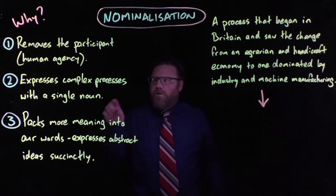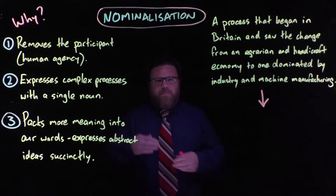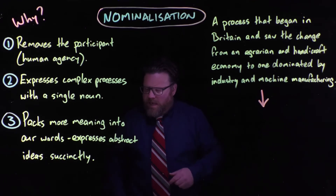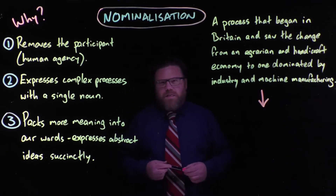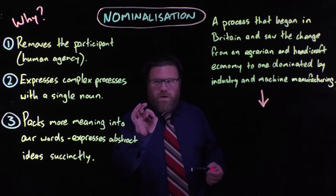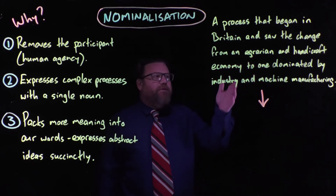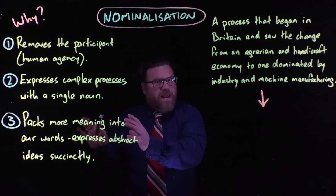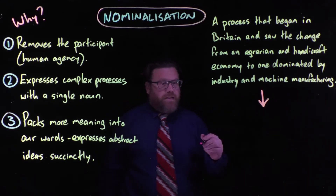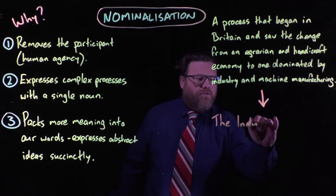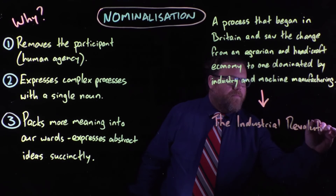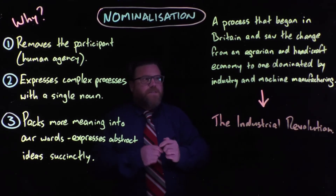The second really good reason to use nominalisation is that it expresses complex processes — that might involve a series of actions — with one single noun, and that helps to pack meaning into our language. We do this all the time in science with examples including photosynthesis or something like global warming. That would take a long time to explain but we can express it with one noun. Here's another example: 'A process that began in Britain and saw the change from an agrarian and handicraft economy to one dominated by industry and machine manufacturing.' Well, what we're talking about, of course, is the Industrial Revolution — a single noun that expresses all of that information.